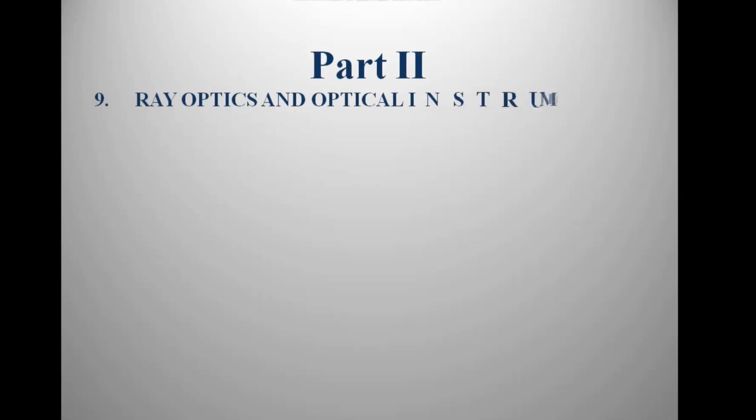Chapter 9 is Ray Optics and Optical Instruments. Optical instruments include the simple microscope, compound microscope, and telescope. In ray optics, we mainly concentrate on the particle characteristics of light. Chapter 10 is Wave Optics, where we treat light as a wave.